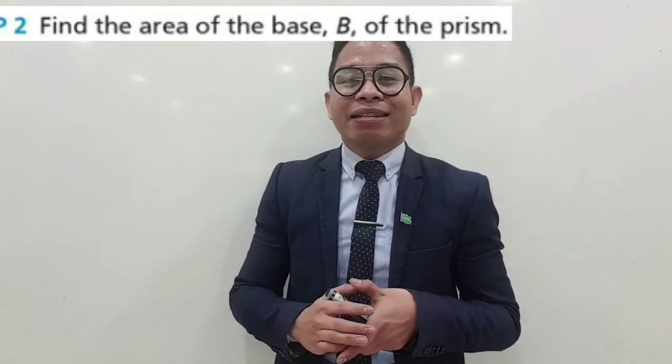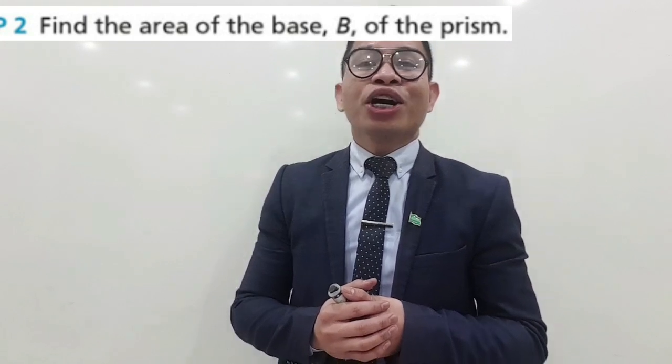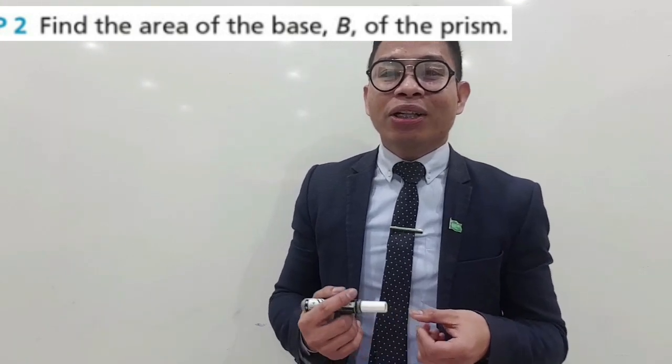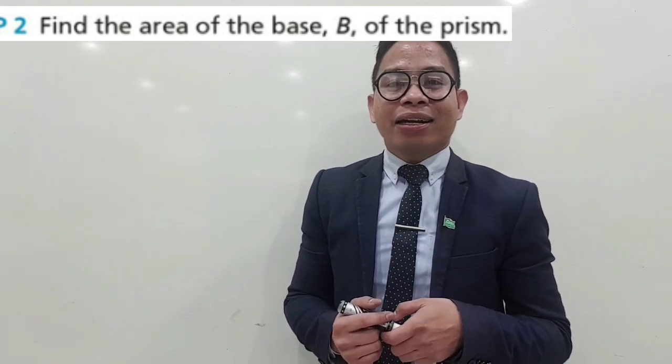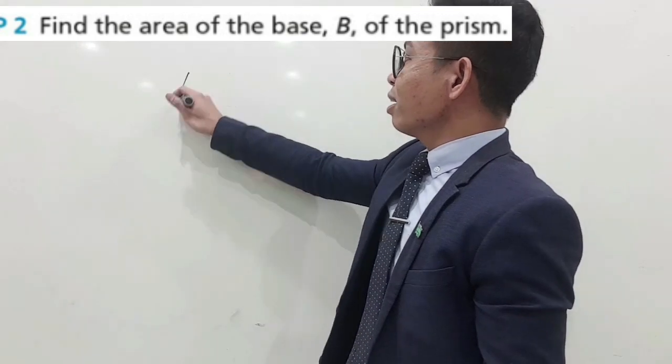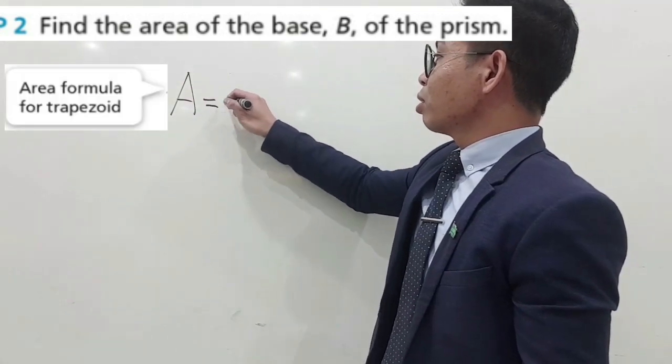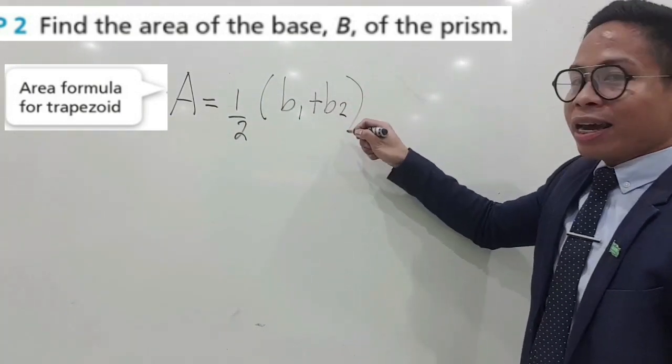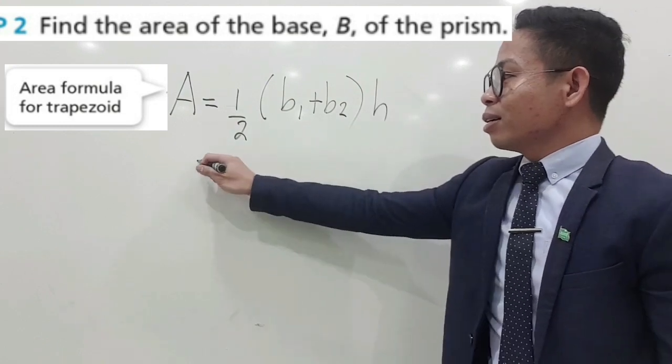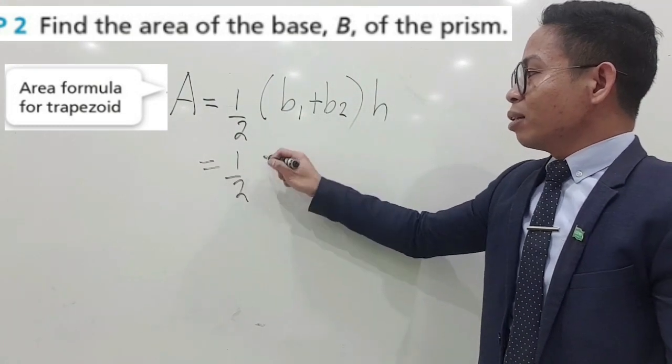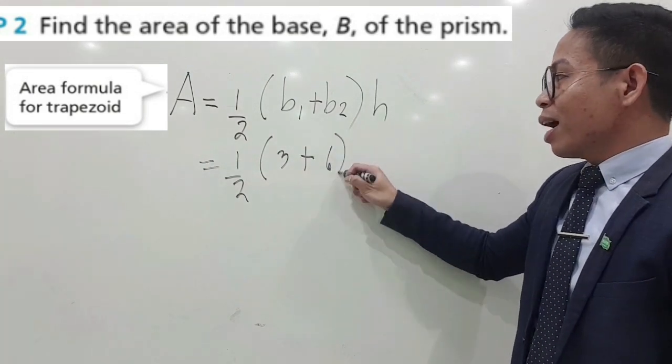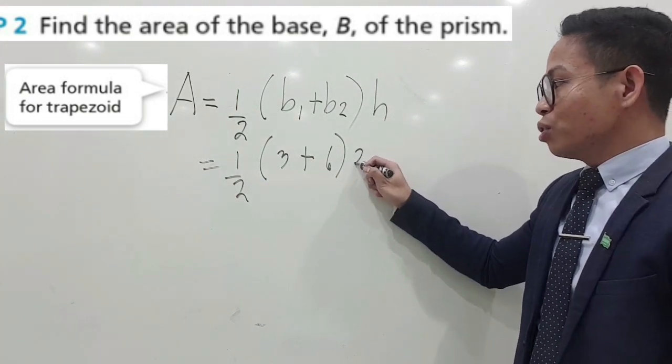Step 2, we will now find the area of the base. Since the tank is in the size and shape of a trapezoidal prism, the base is a trapezoid. We're going to use the formula in finding the area of the trapezoid. Area is equal to 0.5 times the sum of the two bases times the height. Base 1 is 3 feet, Base 2 is 6 feet, and the height of the base is 2 feet.